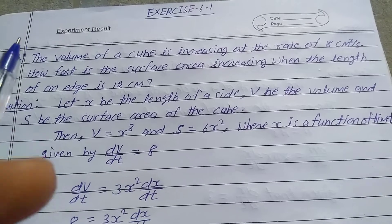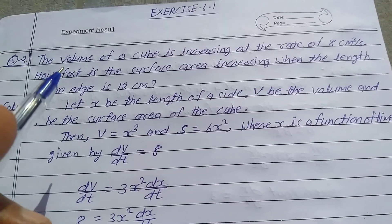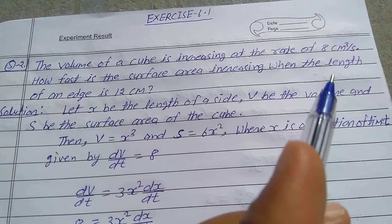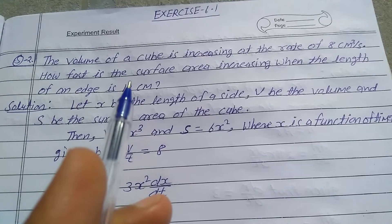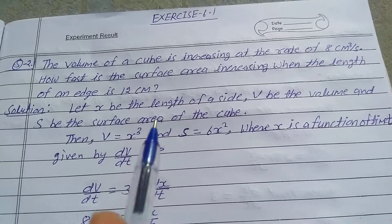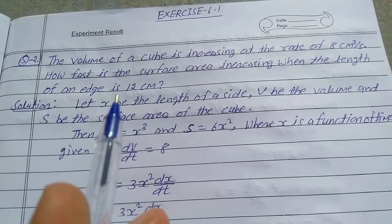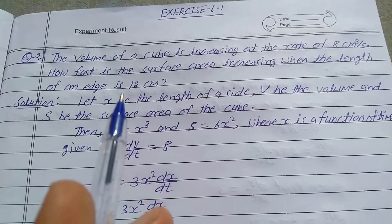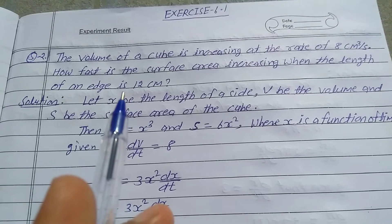Explain question number 2, exercise 6.1, class 12th. The volume of a cube is increasing at the rate of 8 centimeter cube per second. How fast is the surface area increasing when the length of an edge is 12 centimeter? In this question, the rate of change of volume is given and we need to find the surface area increasing rate.